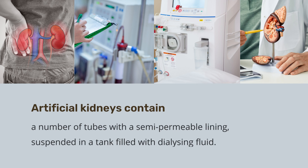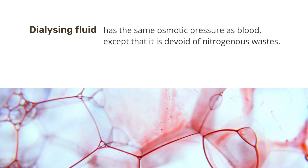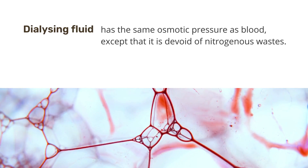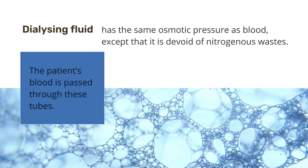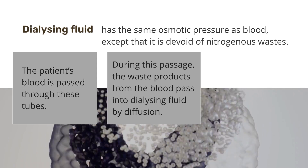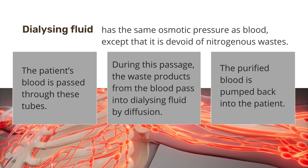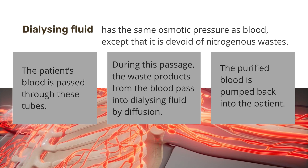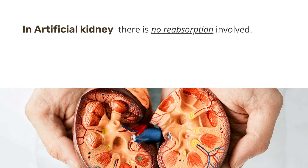Artificial kidneys contain a large number of tubes with a semi-permeable lining, suspended in a tank filled with dialyzing fluid. This fluid has the same osmotic pressure as blood, except that it is devoid of nitrogenous wastes. The patient's blood is passed through these tubes. During this passage, the waste products from the blood pass into dialyzing fluid by diffusion. The purified blood is pumped back into the patient. This is similar to the function of the kidney, but it is different since there is no reabsorption involved.